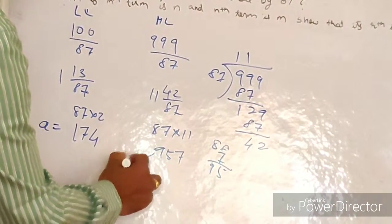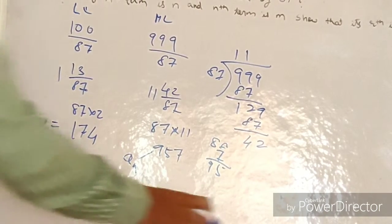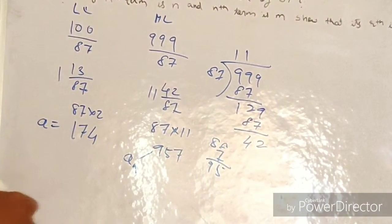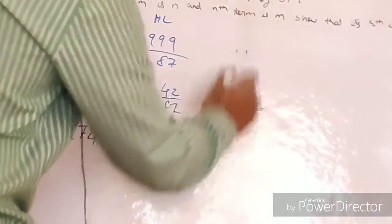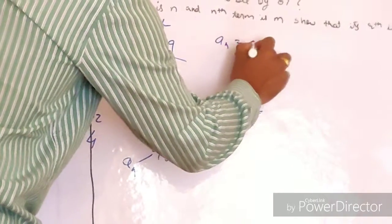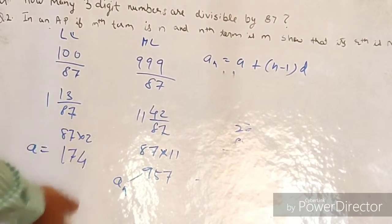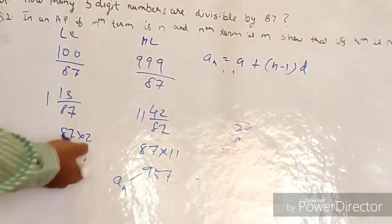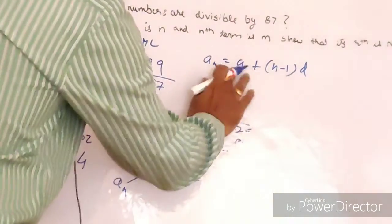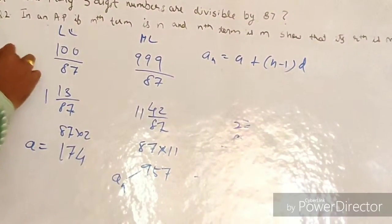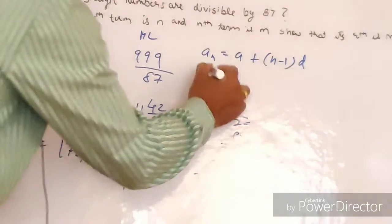So the first term a = 174 and the nth term (last term) = 957. We have learned that the general expression for the nth term is: a(n) = a + (n − 1) × d. Since we are dealing with multiples of 87, the common difference d = 87.